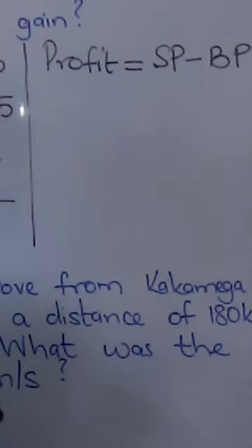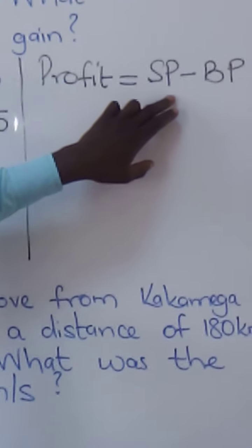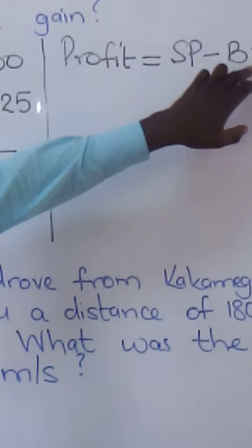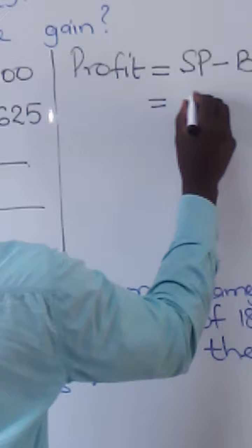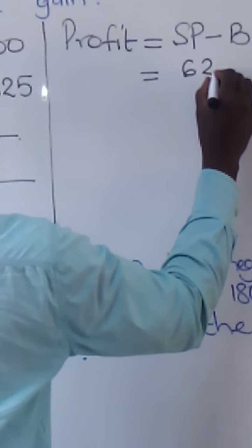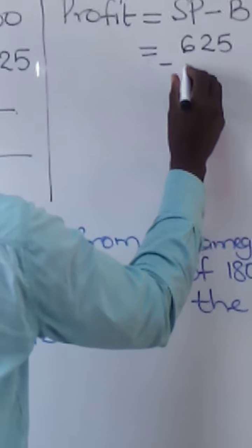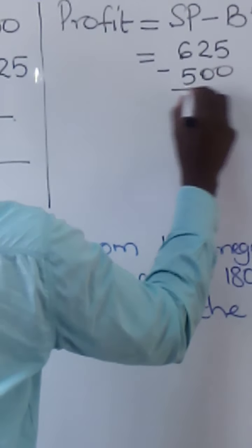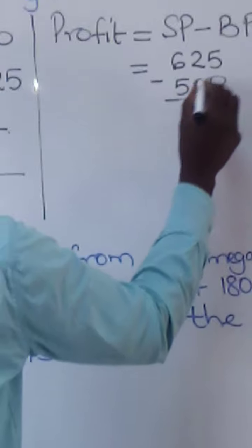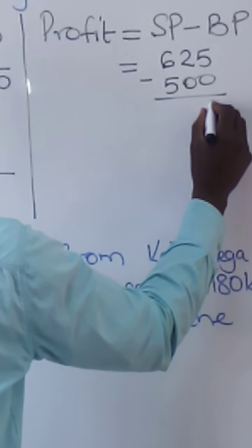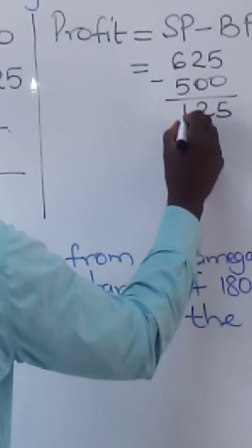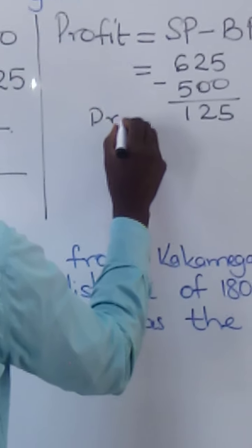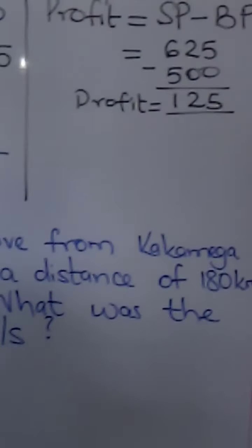Note that SP stands for the selling price. The selling price is 625 shillings and the buying price is 500 shillings. The difference is: 5 minus 0 is 5, 2 minus 0 is 2, 6 minus 5 is 1. So the profit in shillings is 125 shillings.